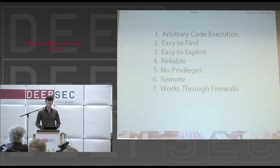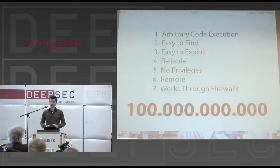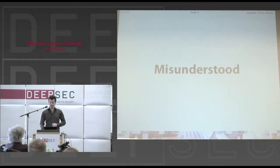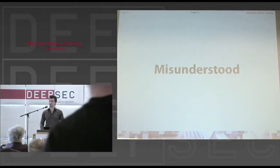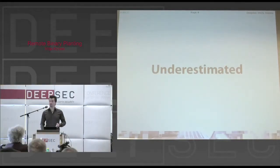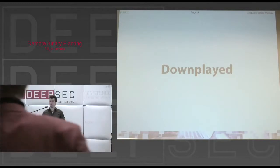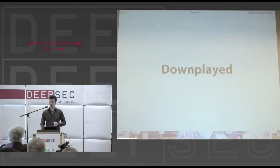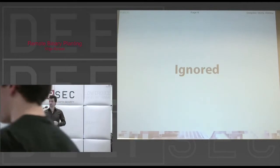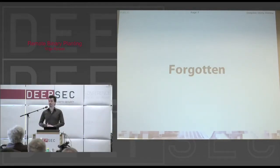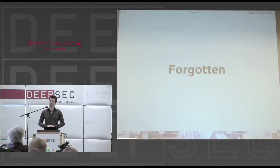So what else does a vulnerability need to become a superstar? Well, this one is not a superstar, actually. Even though we've found over a hundred billion instances of this vulnerability — and I'll tell you the math behind it later — it has been, in 12 years of its public existence, misunderstood by developers, underestimated by security experts, downplayed by some software vendors, ignored by others, and finally forgotten about by most people. So we said, let's make this right. Let's look into this and see if the injustice is actually done.